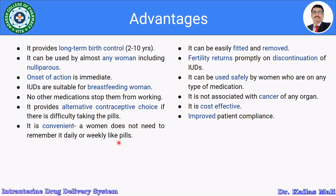IUDs are convenient as a woman does not need to remember to take them daily or weekly like pills. Once placed, they work for approximately 2 to 10 years. They can be easily fitted and removed from the uterine cavity. Fertility returns promptly on discontinuation. They can be used safely by women on any type of medication, are not associated with cancer of any organ, are cost-effective, and improve patient compliance.